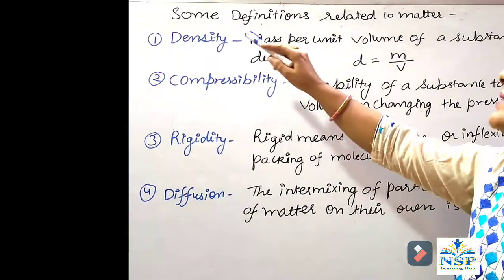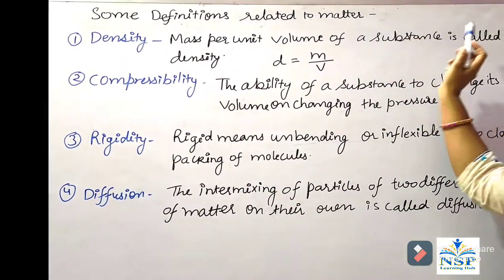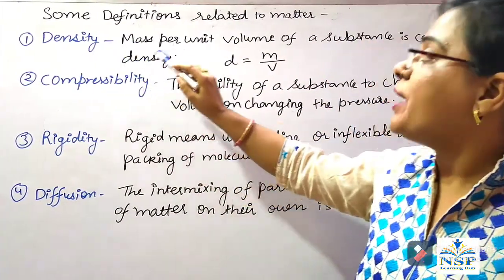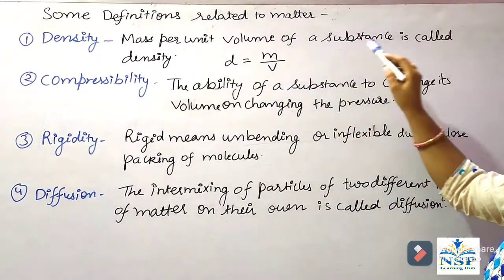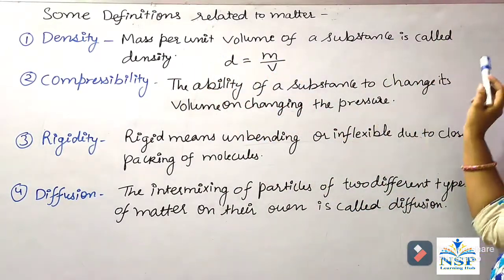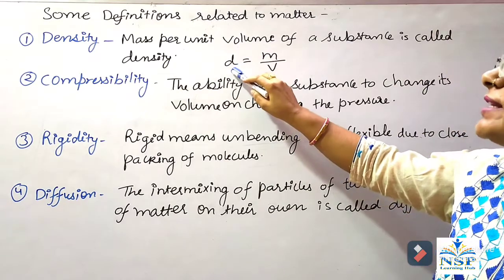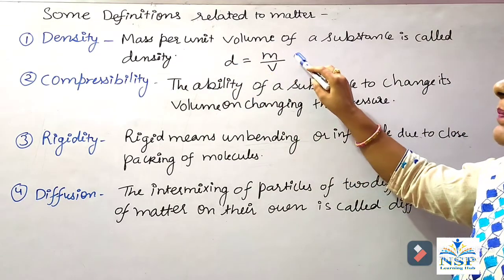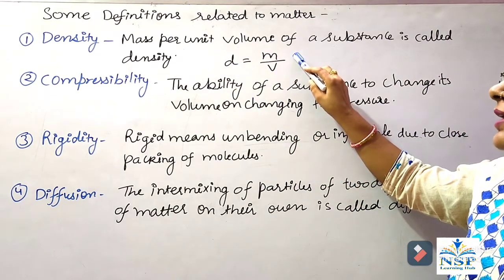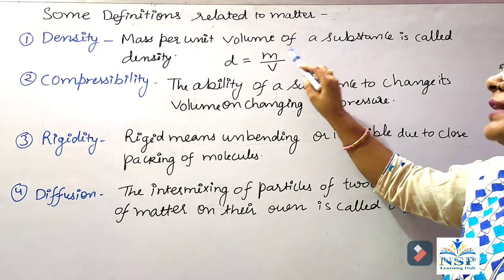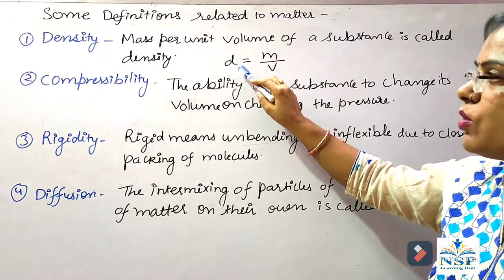Students, some definitions related to matter are: Number 1, Density. Mass per unit volume of a substance is called density. It means density is directly proportional to mass of a matter. If mass is more, then density is also more.